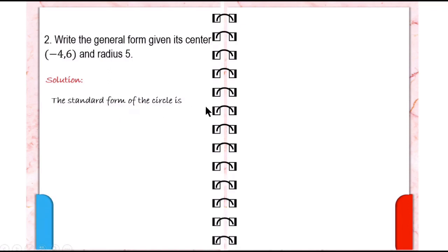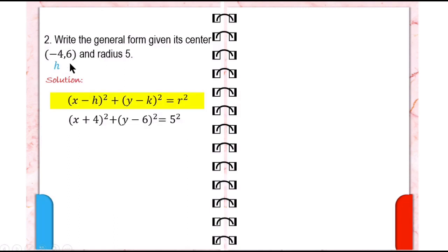In this problem, the standard form of the circle is x plus 4 raised to 2, plus y minus 6 raised to 2, equals 5 squared, where h is equal to negative 4 and k equals 6. Replace h with negative 4 — negative times negative 4 equals positive 4. Then replace k by 6 — negative times positive 6 is negative 6.